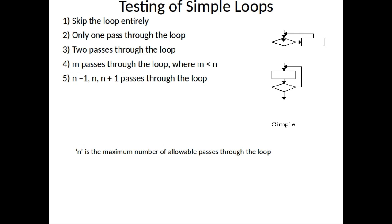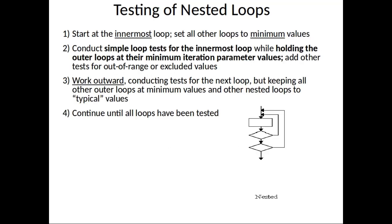When testing simple loops, the possibilities are: one — skip the loop entirely; two — only one pass through the loop; three — two passes through the loop; four — m passes through the loop where m is less than n, the maximum allowable passes; and five — n minus one, n, and n plus one passes through the loop.